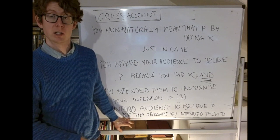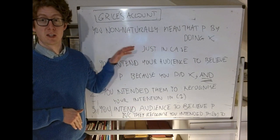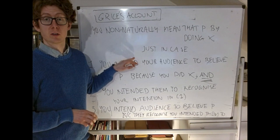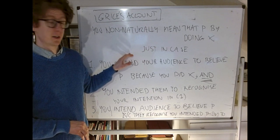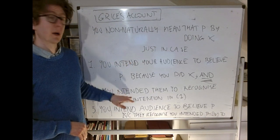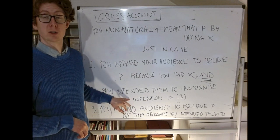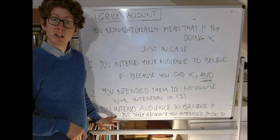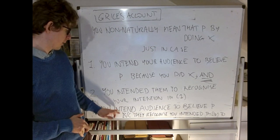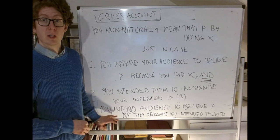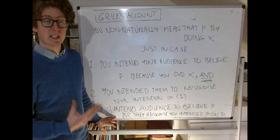You have to intend your audience to believe something precisely because they recognize that you intended them to do that. Like the Mark II account, Grice's account accrues all the advantages of the accounts we've seen. It doesn't have a problem with the tailcoat example or the basketball player example, for the same reason the original intentional account didn't. It doesn't have a problem with the detective case because the Mark II account didn't, and this is just the Mark II account with an extra clause. And finally, it doesn't have the problem the Mark II account faced — the china-breaking example — because it has this extra final third condition. In the china-breaking example, Grice thinks you don't in fact have this third intention, and that's why it's not a case of non-natural meaning.